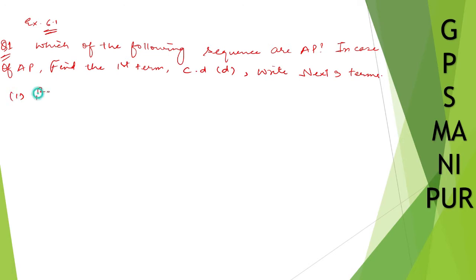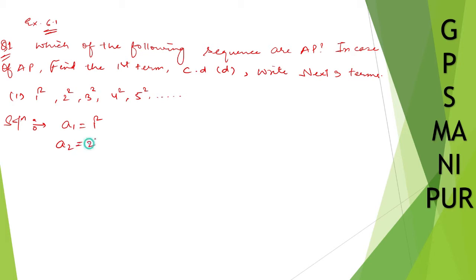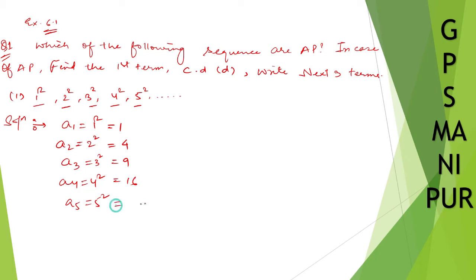Roman number 1: 1 square, 2 square, 3 square, 4 square, 5 square. Solution. We need to find whether this is an AP or not. So a1 is equal to 1 square, a2 is equal to 2 square, a3 is equal to 3 square, a4 is equal to 4 square, a5 is equal to 5 square, which is also equal to 1, 4, 9, 16, and 25.